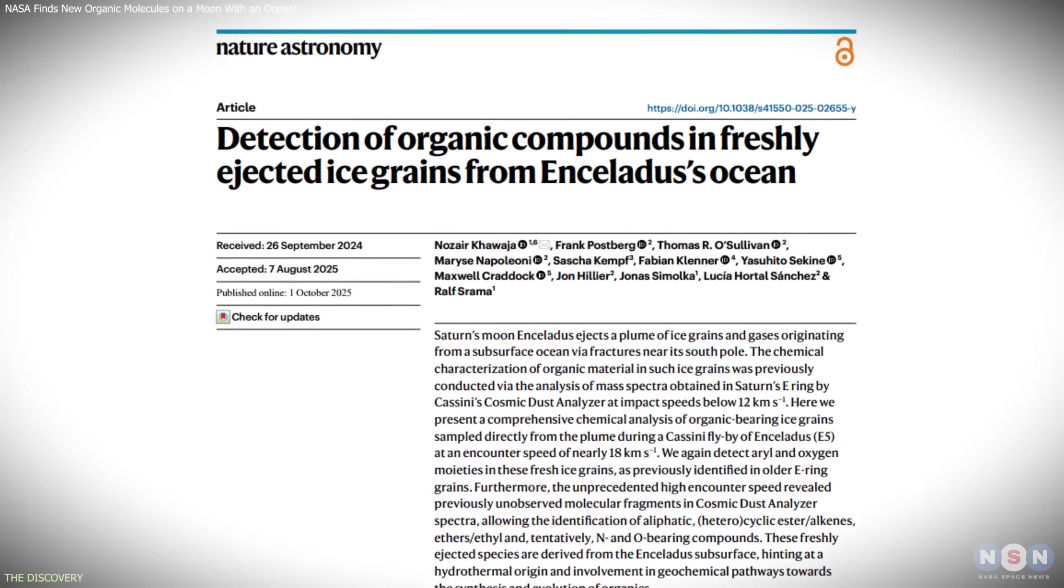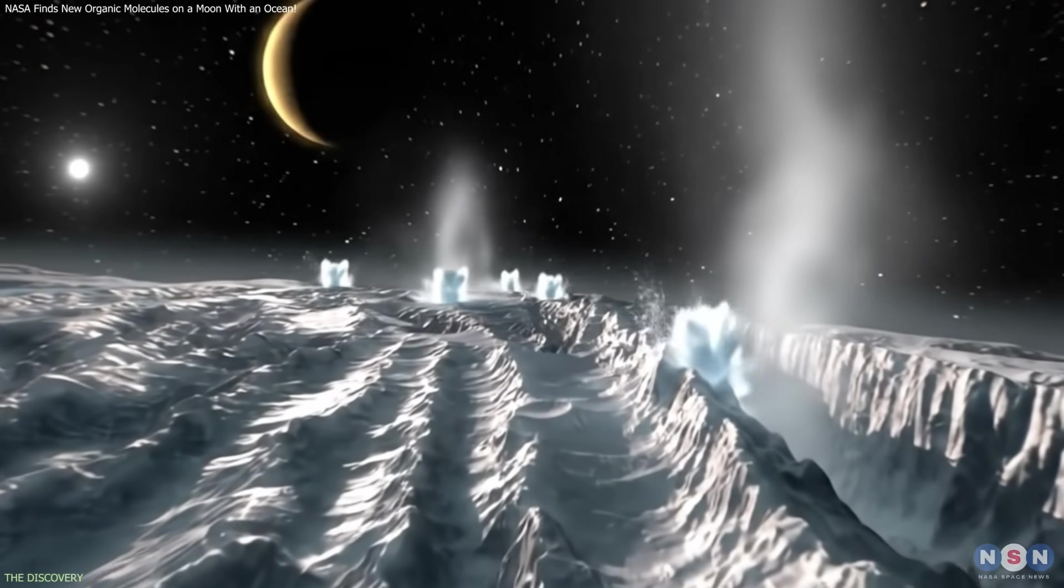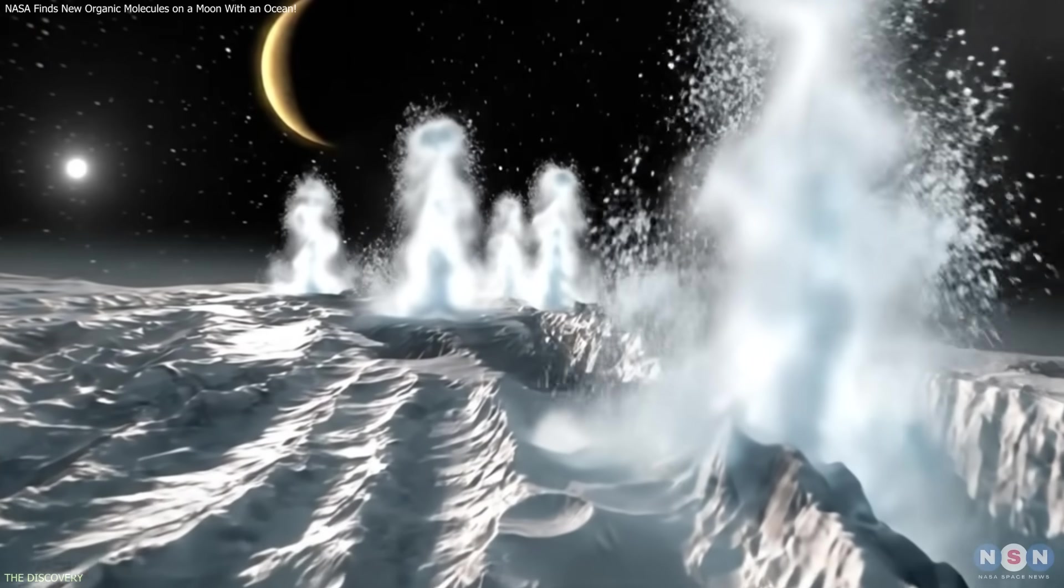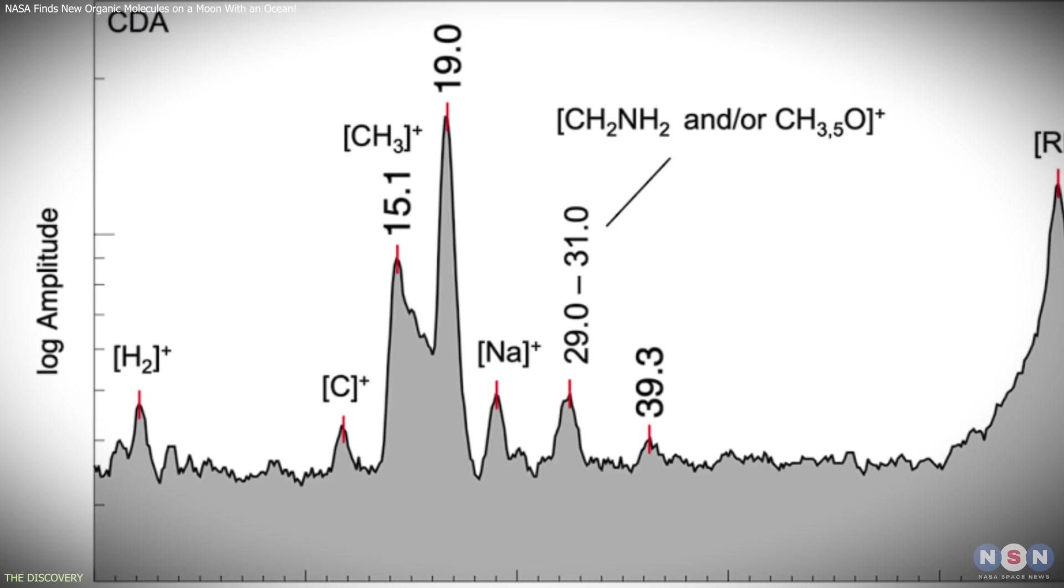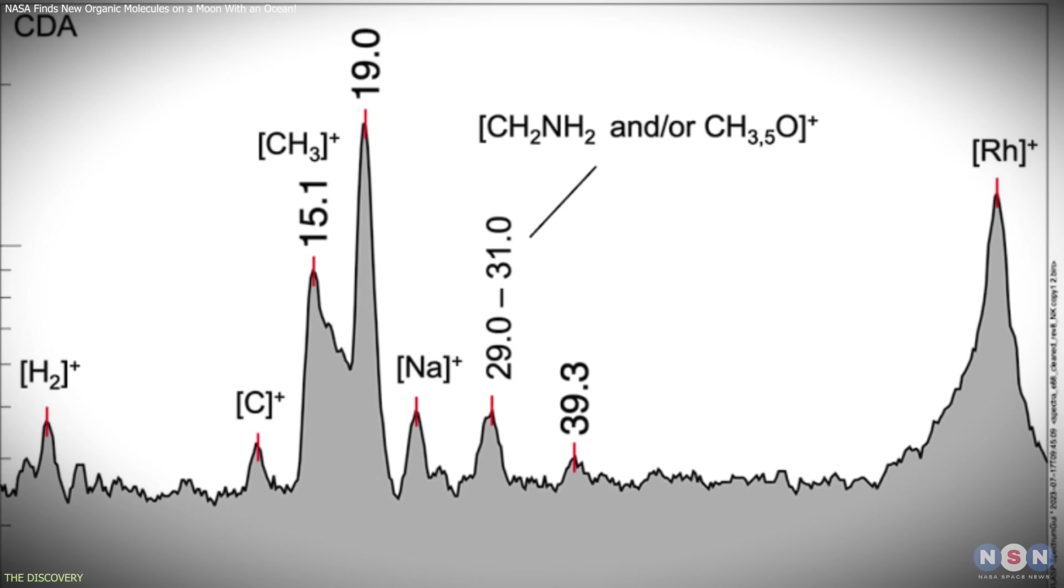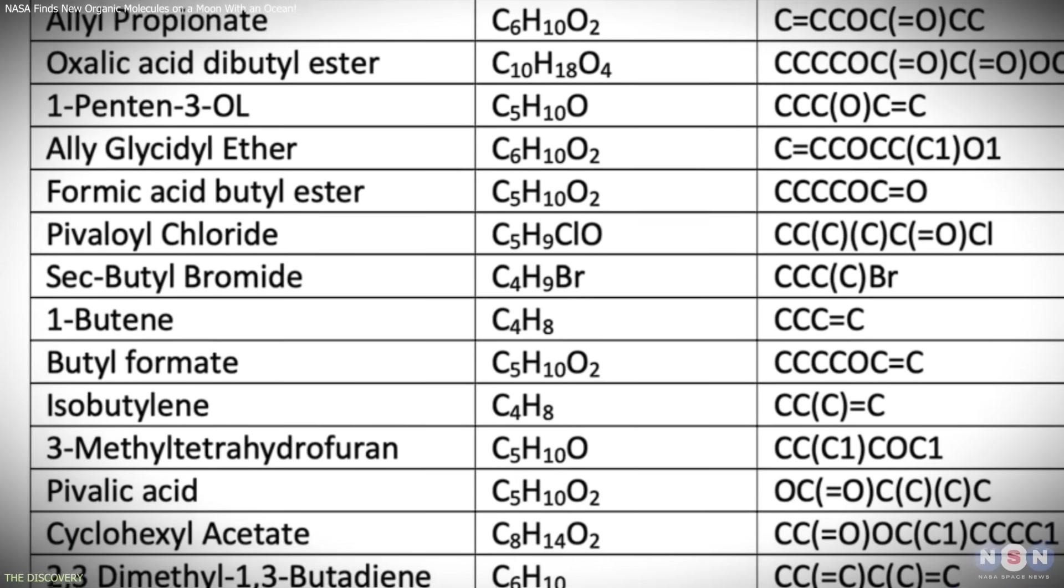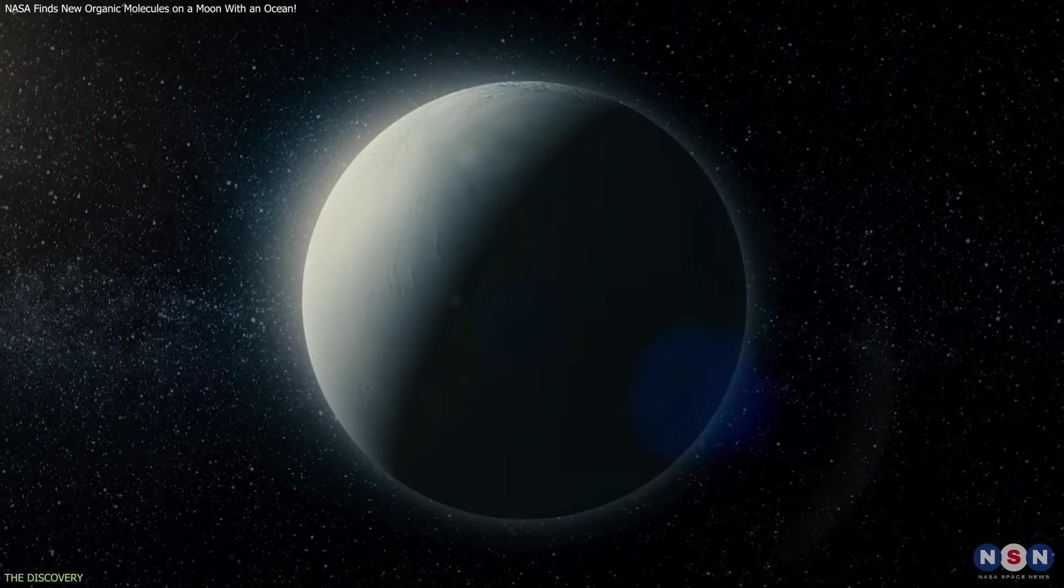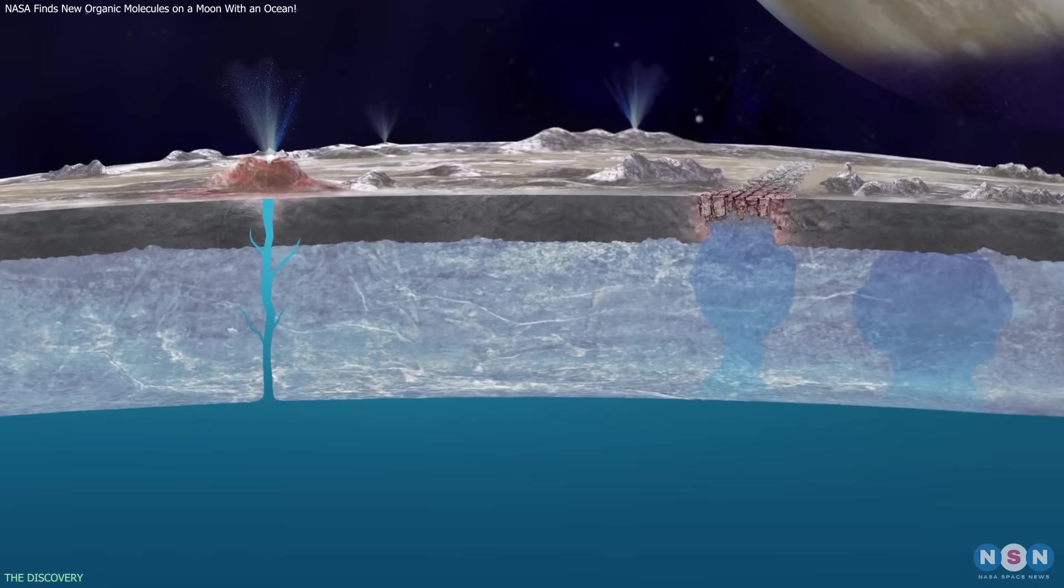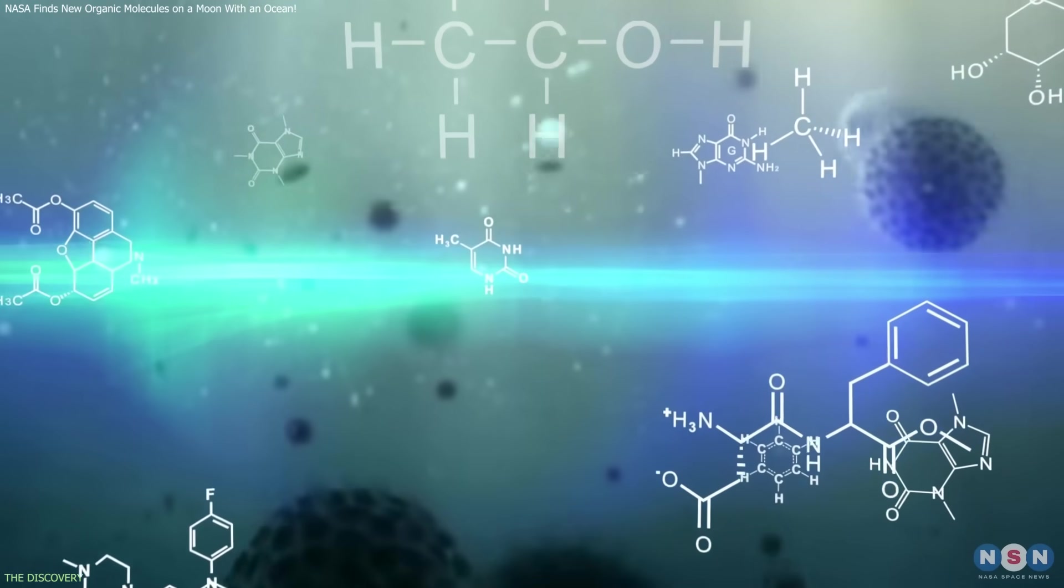The new study instead isolates the particles collected directly within the plume, material that existed in space only briefly before being sampled. By reprocessing this older dataset with updated analytical methods, scientists identified a wider range of organic compounds than previously recognized. These include several families of molecules such as esters, ethers, and cyclic structures that had not been linked to Enceladus before. Their presence indicates that the ocean's chemistry supports reactions capable of forming more elaborate organic structures.